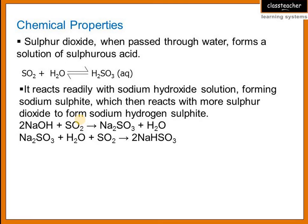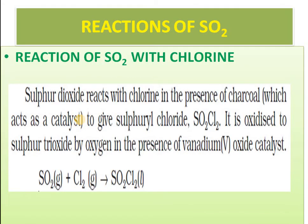If excess sulfur dioxide is passed through sodium hydroxide solution, the acid salt sodium bisulfite is formed; with a lesser amount of sulfur dioxide, the normal salt sodium sulfite is obtained. Sulfur dioxide reacts with chlorine in the presence of charcoal as a catalyst to give sulfuryl chloride (SO₂Cl₂). Sulfur dioxide also reacts with oxygen in the presence of vanadium pentoxide to give sulfur trioxide (SO₃).